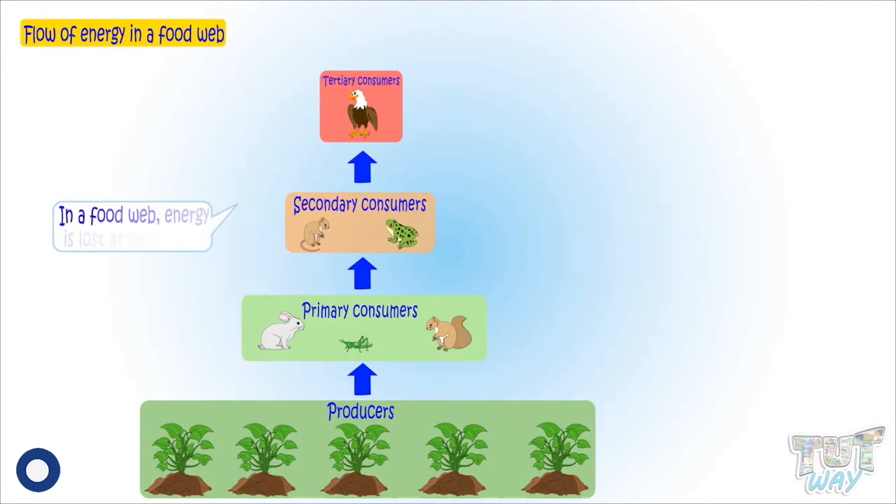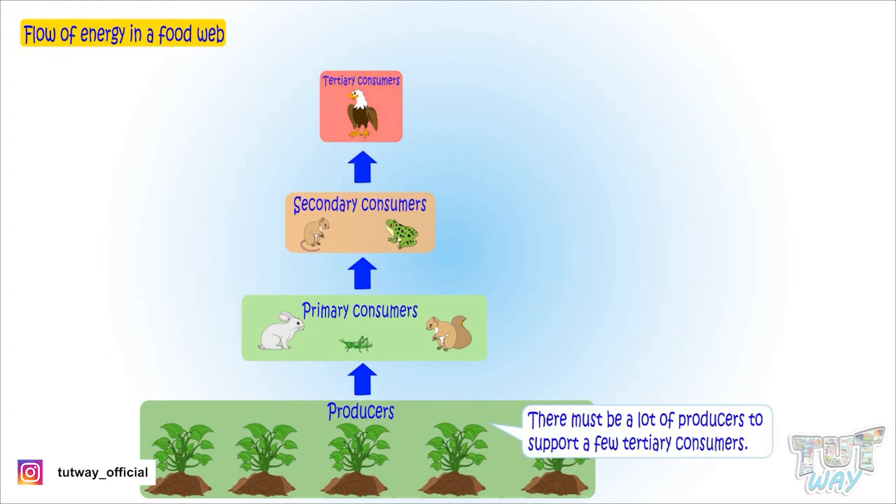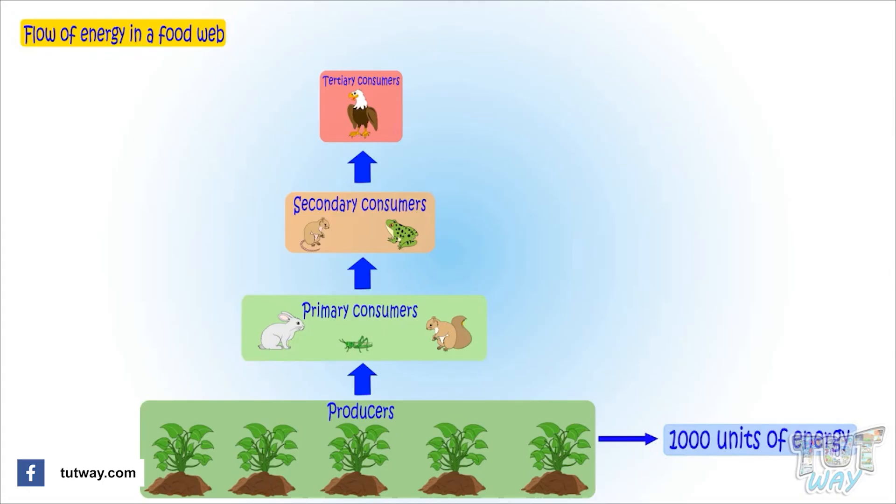In a food chain or a web, energy is lost at each step. There must be a lot of producers to support a few tertiary consumers. If there are 1000 units of energy at producer level, primary consumers will get 100 units of energy, secondary consumers will get 10 units, and tertiary or third level consumers will get only one unit of energy.